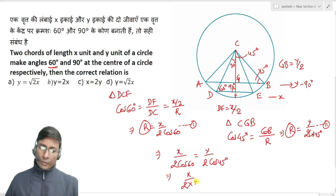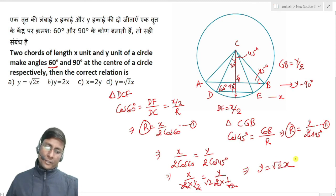And y by 2 times cos 45, where cos 45 value is 1 by root 2. The 2s cancel, root 2 and root 2 times cancel, so y equals root 2 times x.